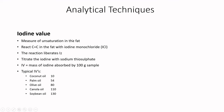Iodine value is going to measure the level of unsaturation within your fat — it's just an indication of the saturation value. Coconut oil, as we know, is very high in saturated fats, so it's got a low iodine value, whereas soybean oil has lots of polyunsaturated fats and as such it's got a pretty high iodine value.